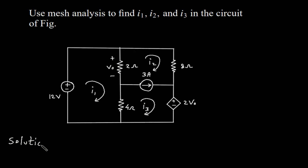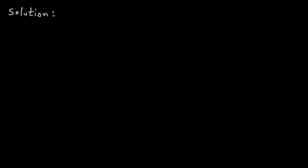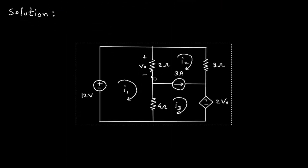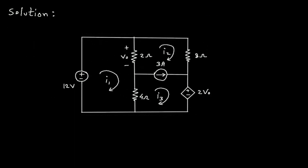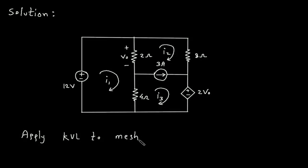Solution. First we will redraw the circuit. Now we will apply KVL to mesh number 1.